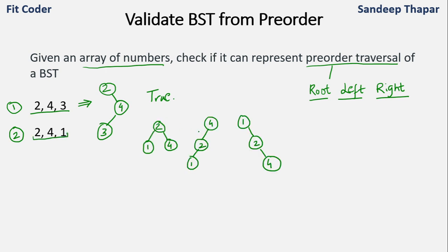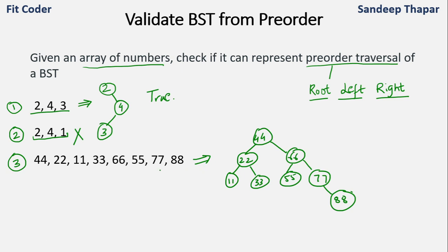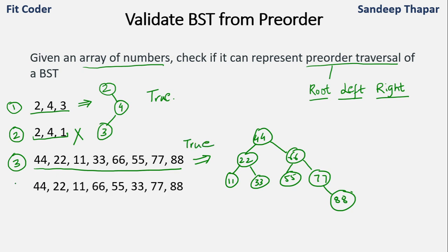For the numbers 2, 4, and 1, there can be three possible BSTs. If we check the pre-order traversal for each: the first tree gives 2, 1, 4; none of them matches 2, 4, 1 which was given to us. So 2, 4, 1 cannot represent a pre-order traversal of a binary search tree — this is false. For the fourth example, we also cannot construct a BST that has that pre-order traversal.